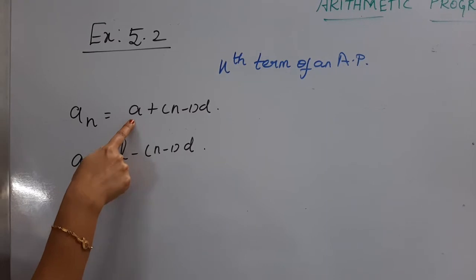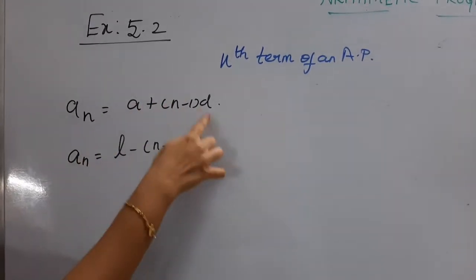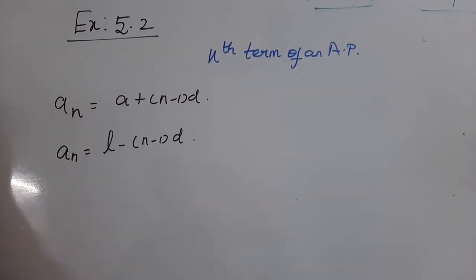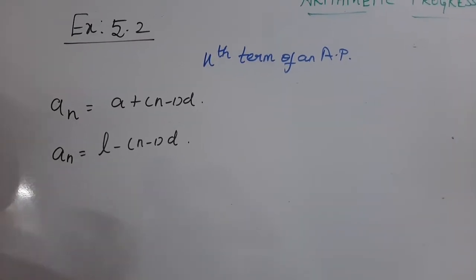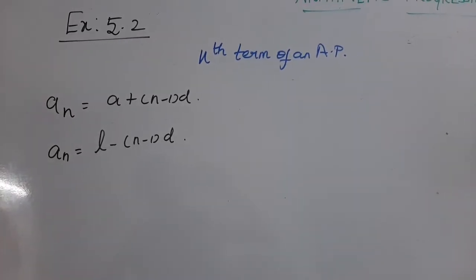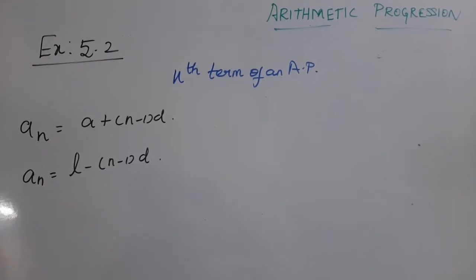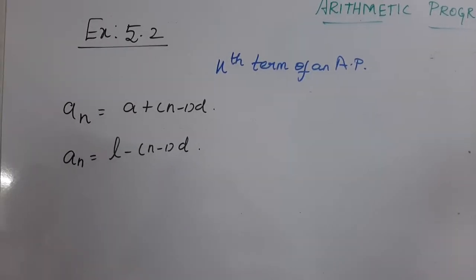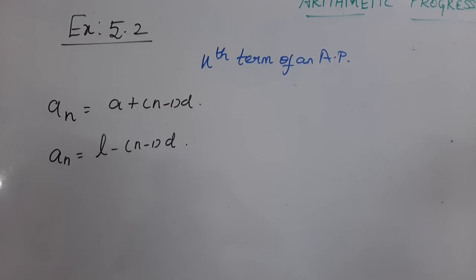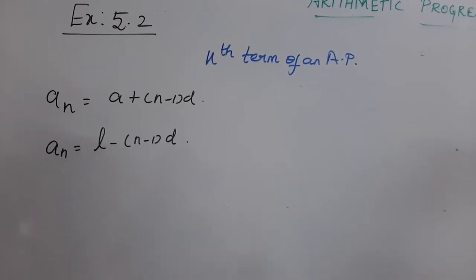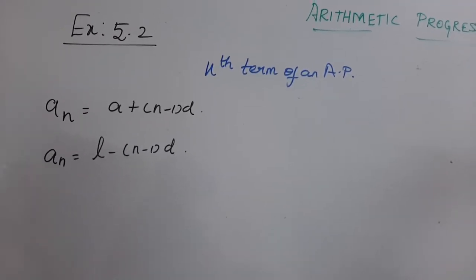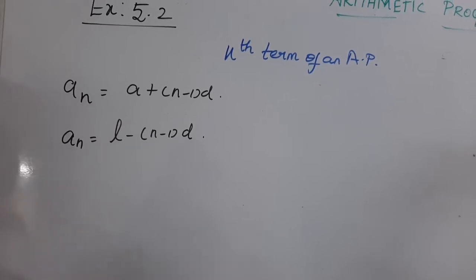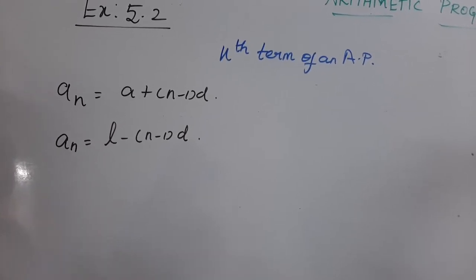What is A? A is the first term of the series. What is D? D is the common difference in that particular AP. What is N? N is the number of terms included in the AP. A and D can take any value — positive, negative, fraction, or decimal. But N will always take a positive whole number value.